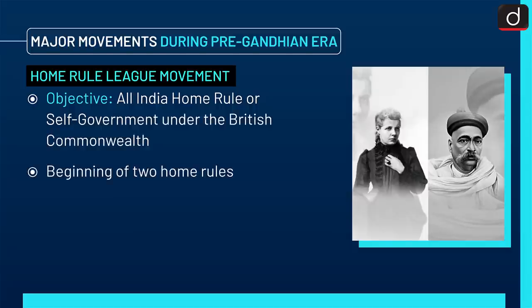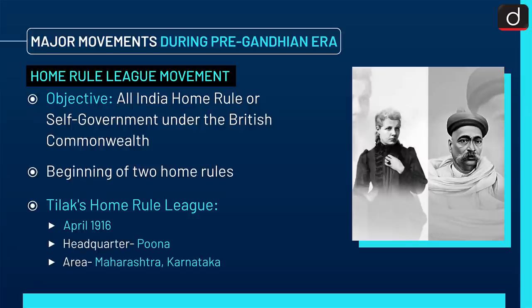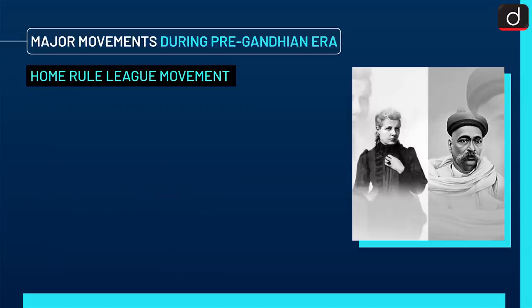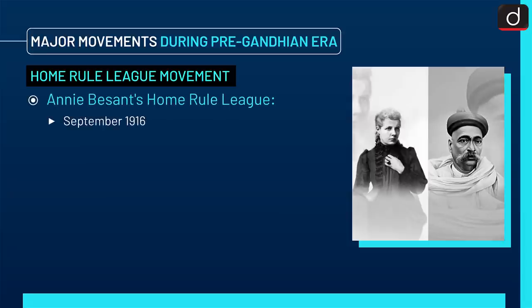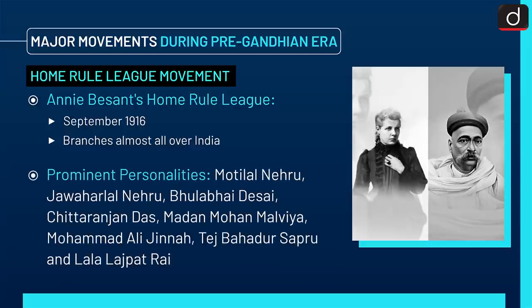The next movement is the Home Rule League Movement. Its objective was All India Home Rule or Self-Government under the British Commonwealth. It marked the beginning of two Home Rule Leagues. First was Tilak's Home Rule League, established in April 1916, with its headquarter in Pune and covering the area of Maharashtra and Karnataka. Second was Annie Besant's Home Rule League, established in September 1916, with branches almost all over India.